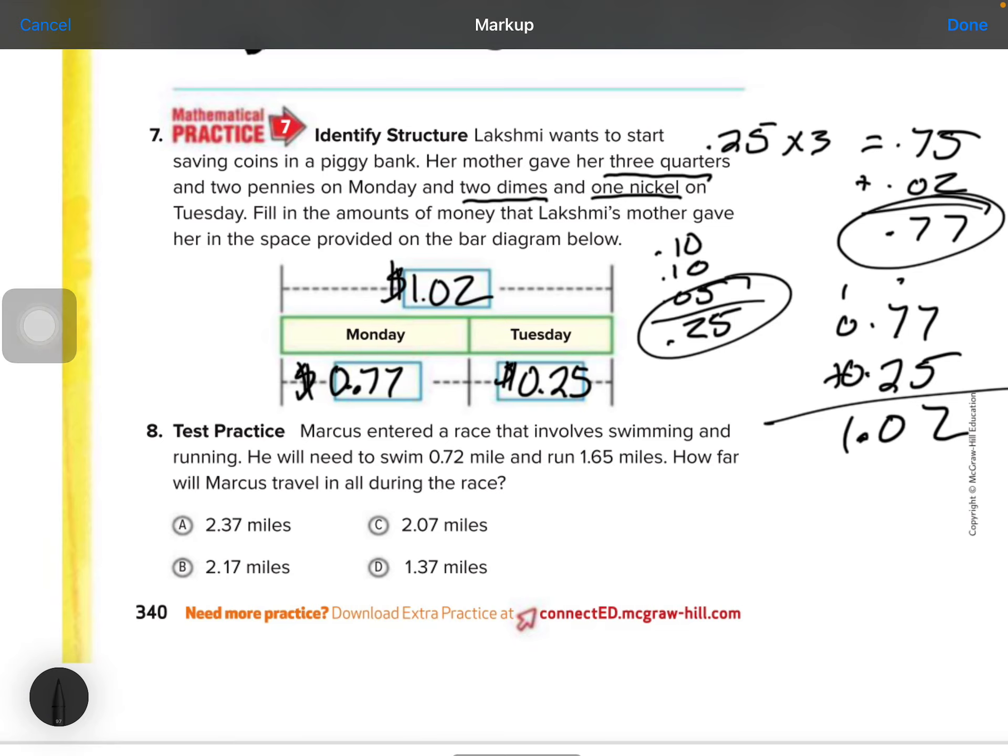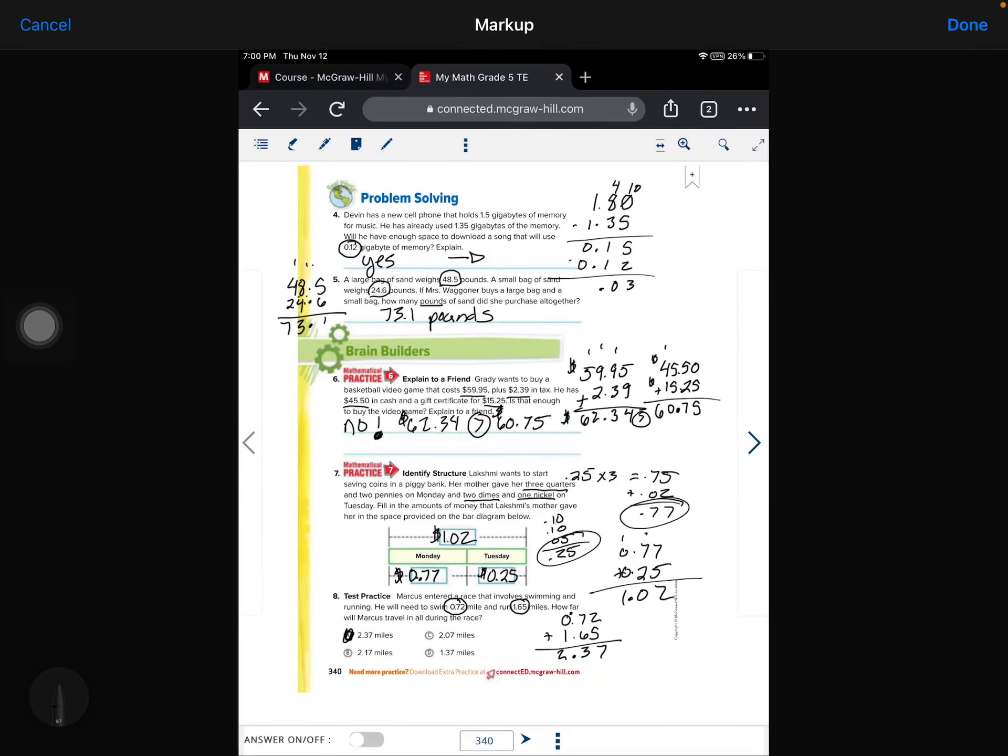Number 8. Marcus entered a race that involves swimming and running. He will need to swim 0.72 miles and run 1.65 miles. How far will he travel during the race? So it's an addition problem. We've got to line up the decimals. So our first problem, 0.72, and then our second increment, 1.65. 5 plus 7 is 12. Bring down that decimal. 6 plus 1 plus 1 is 8, so 2.37. That's how far he'll travel. All right. Tear it out. Turn it in.